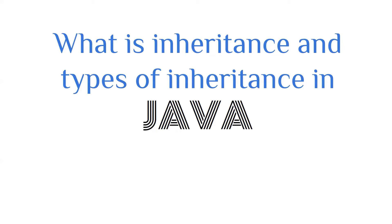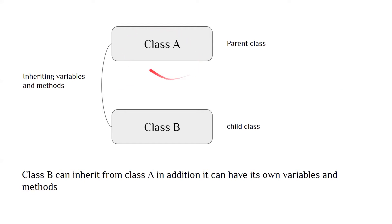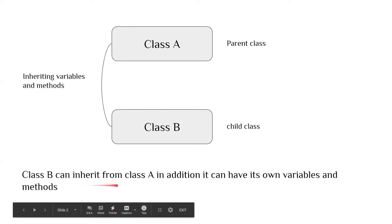In programming, whenever a class wants to take the properties — variables or methods — of another class, we use the inheritance concept. For example, if you have class A and class B, class A is the parent class and class B is the child class. Class B can inherit methods and variables from class A. We use inheritance when we don't want to write methods and variables again and again. Class B can inherit everything from class A, and in addition it can also have its own variables and methods.